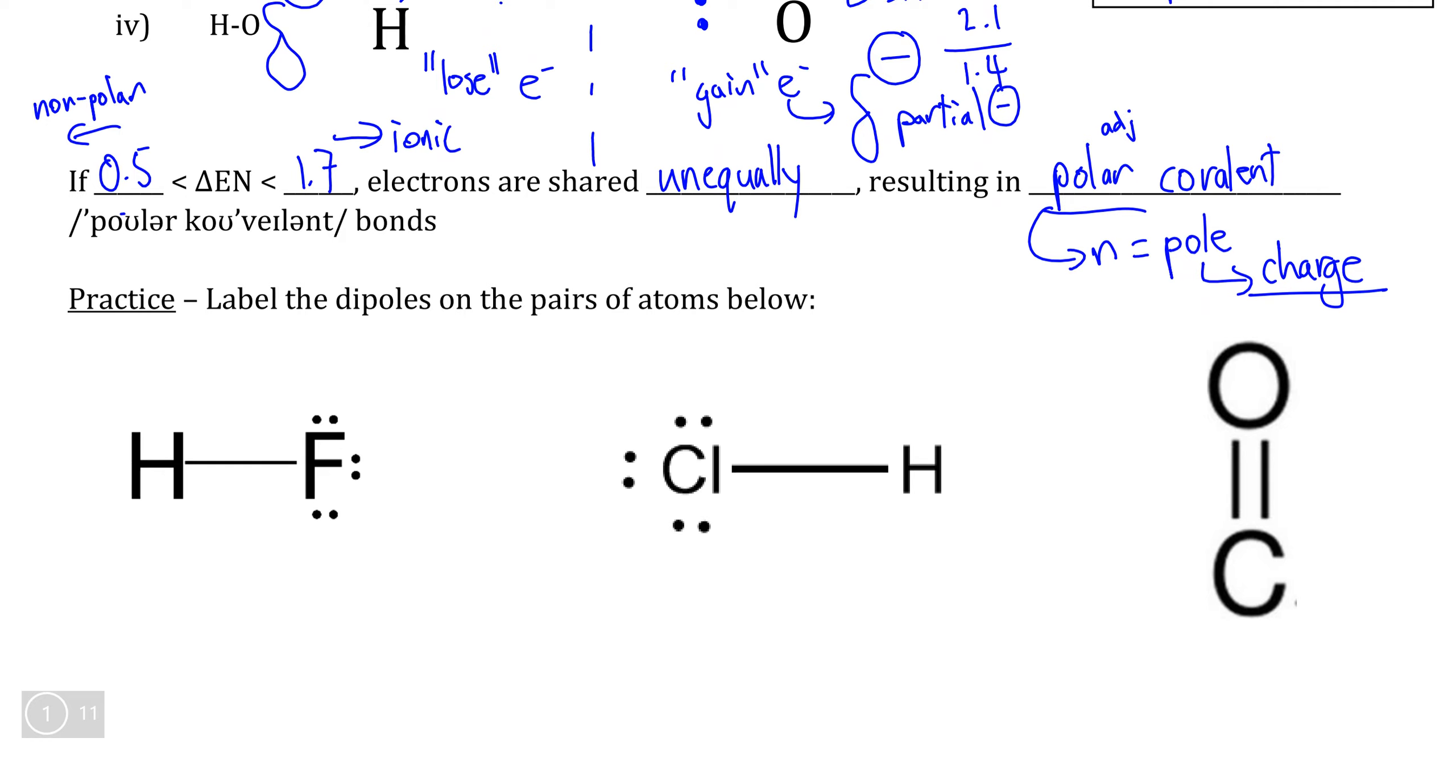To test your knowledge of using electronegativity to identify polar and nonpolar covalent bonds, see if you can identify where the positive end and where the negative end of each dipole is in each of the three pairs of bonds below.